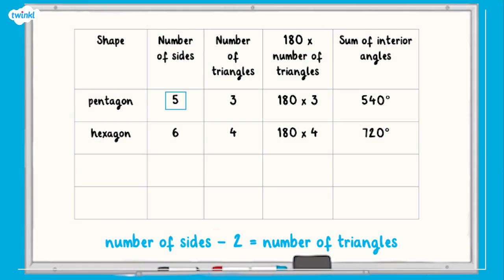Have you spotted any patterns? That's right! The number of triangles a polygon can be split into is two fewer than the number of sides. A pentagon has five sides, so five subtract two is equal to three, which is the number of triangles the pentagon can be divided into. A hexagon has six sides, so six subtract two is equal to four, which is the number of triangles a hexagon can be divided into.